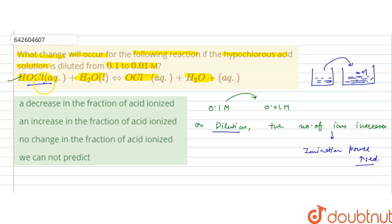If ionization power increases, it means the fraction of the acid that will be ionized increases, so B is the correct answer: an increase in the fraction of the acid ionized. I hope you understood the solution, thank you.